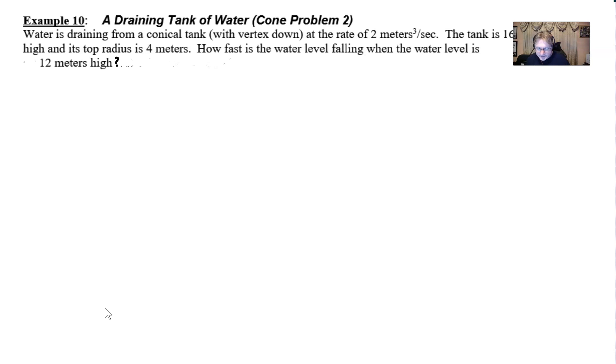The problem says that water is draining from a conical tank with the vertex down at the rate of 2 cubic meters per second. The tank is 16 meters high, its top radius is 4 meters. How fast is the water level falling when the water level is 12 meters high?